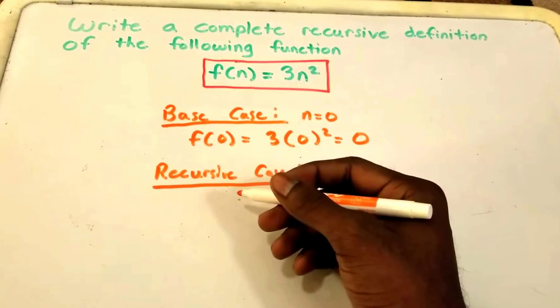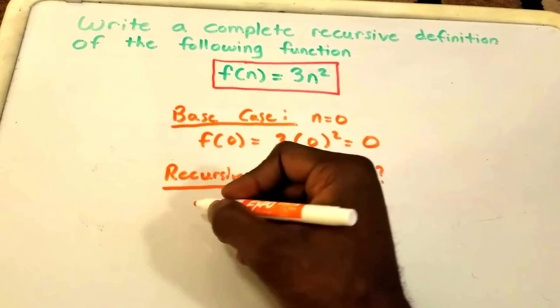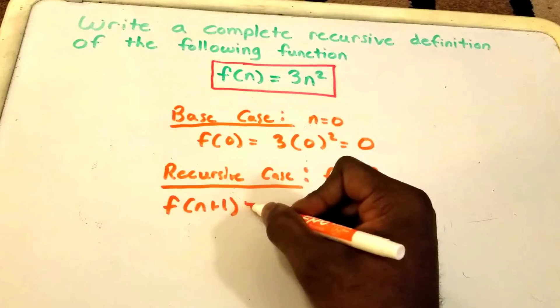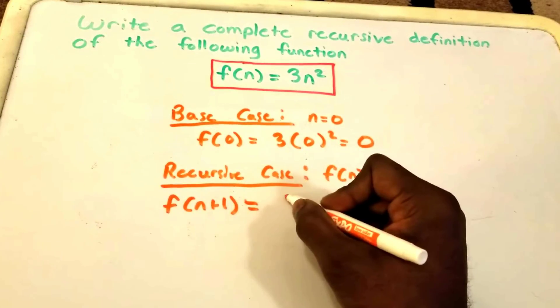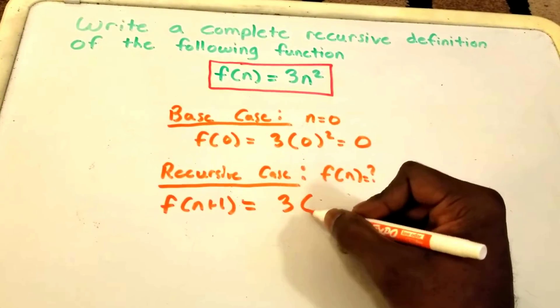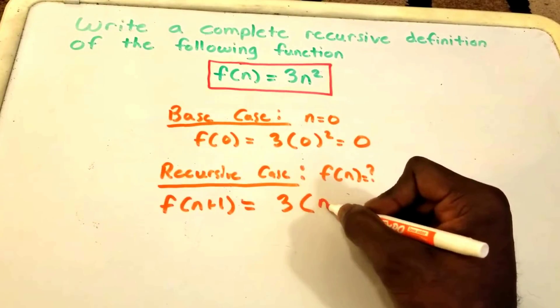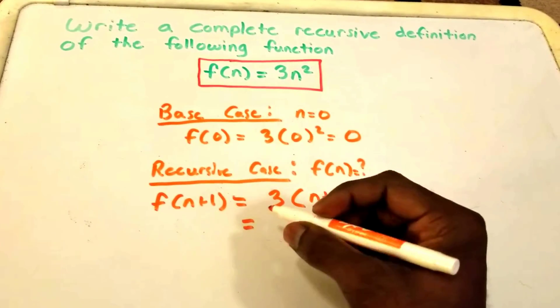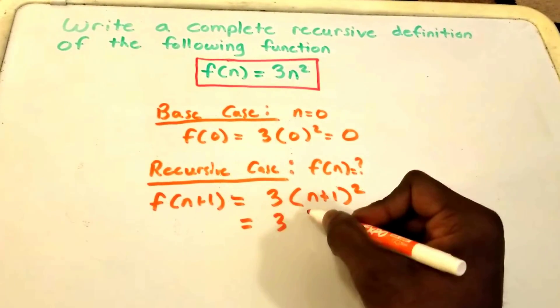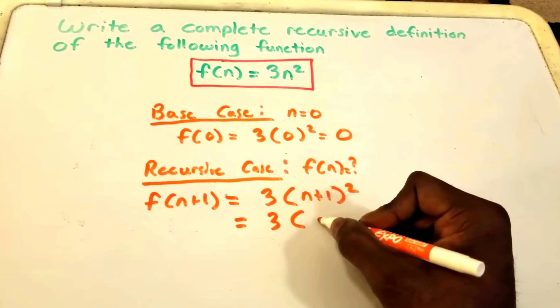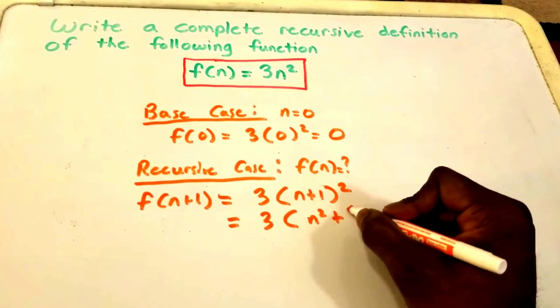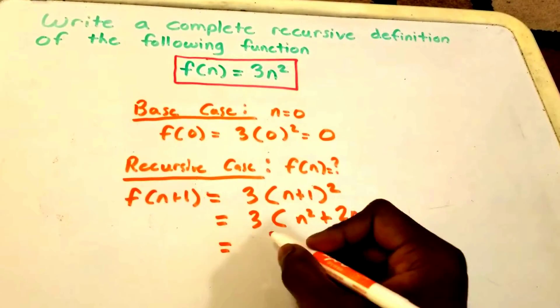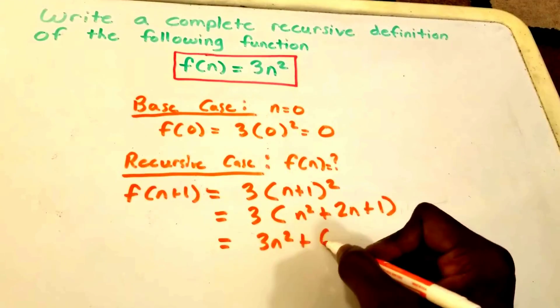So let's see how it relates to f(n+1). Well, f(n+1) is 3 times (n+1) squared, and this right here is just equal to 3 times (n² + 2n + 1), and this is equal to 3n² + 6n + 3.